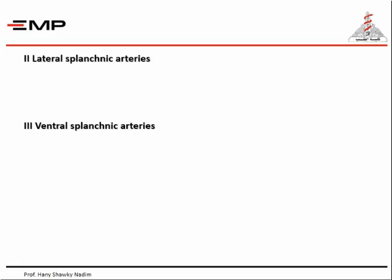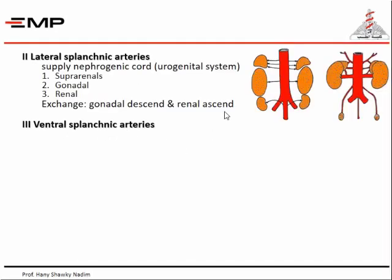Now we consider the fate of the two remaining types of branches of the dorsal aorta: the lateral splanchnic arteries and the ventral splanchnic arteries. The lateral splanchnic arteries supply the intermediate cell mass of mesoderm, which forms the urogenital system — that is, the suprarenal cortex, the gonad, and the kidneys. The gonad or testes/ovary arise high up while the kidney arises low in the pelvis, then they exchange positions — the kidney ascends and the testes or ovary descend. These lateral splanchnic arteries give the paired branches of the abdominal aorta: the inferior phrenic giving the superior suprarenal, the middle suprarenal, the renal which also gives the inferior suprarenal, and the gonadal artery.